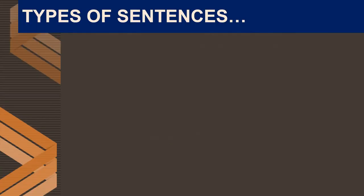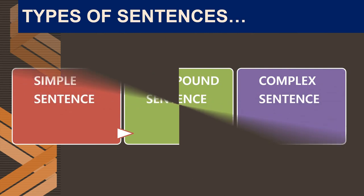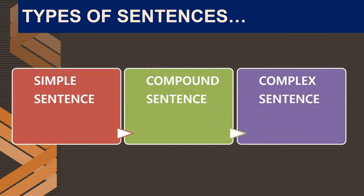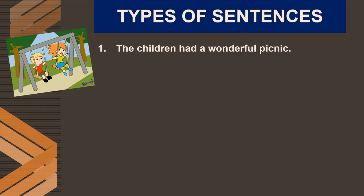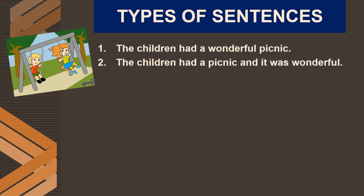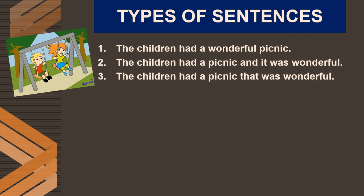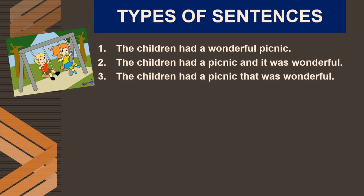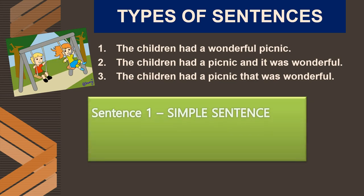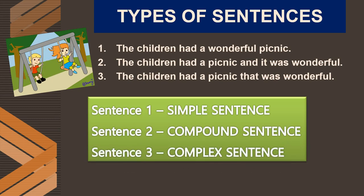Now we move on to learn the types of sentences — simple, compound and complex. Look at these three sentences: 'The children had a wonderful picnic.' 'The children had a picnic and it was wonderful.' 'The children had a picnic that was wonderful.' The first one is a simple sentence, the second is a compound sentence, and the third is a complex sentence. Why it is so, you will understand in the following slides.